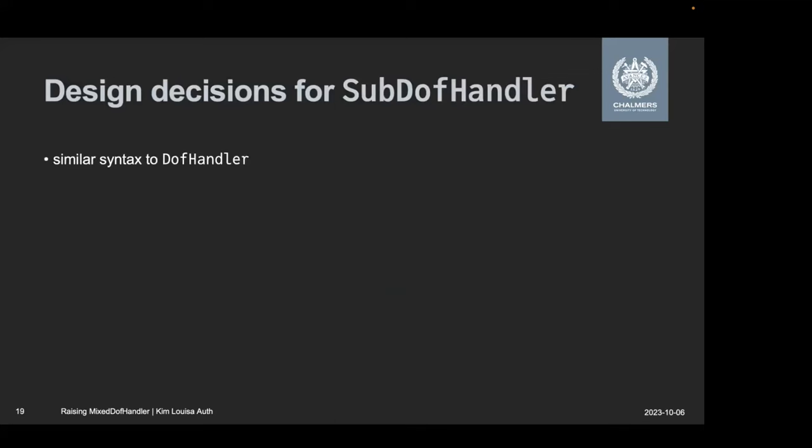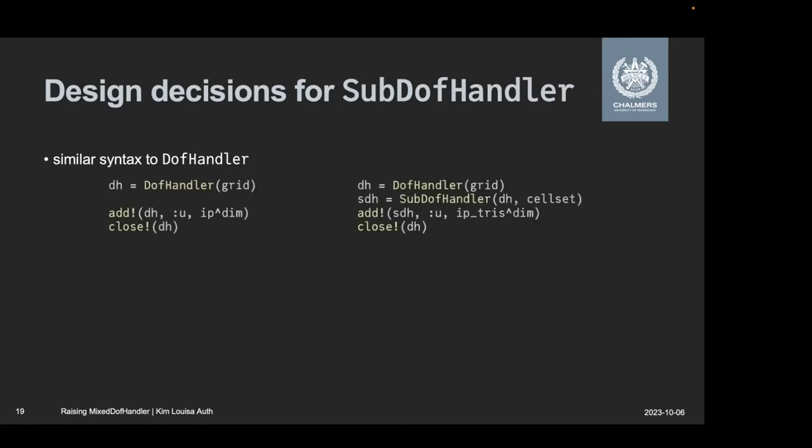So now that you know the syntax, I want to mention a couple of things why I thought this was a good syntax. Some of you might remember that we had a couple of discussions about the syntax. This was definitely not the only choice that was possible to implement. So one thing that I thought it should have is it should be similar to the old DofHandler syntax that has been around for many years now. So here on the left, we see how we would add a single field to a regular DofHandler. And on the right, we have a single subdomain to a sub DofHandler. And you can see that they're almost the same apart from the fact that I need to define the subdomain.